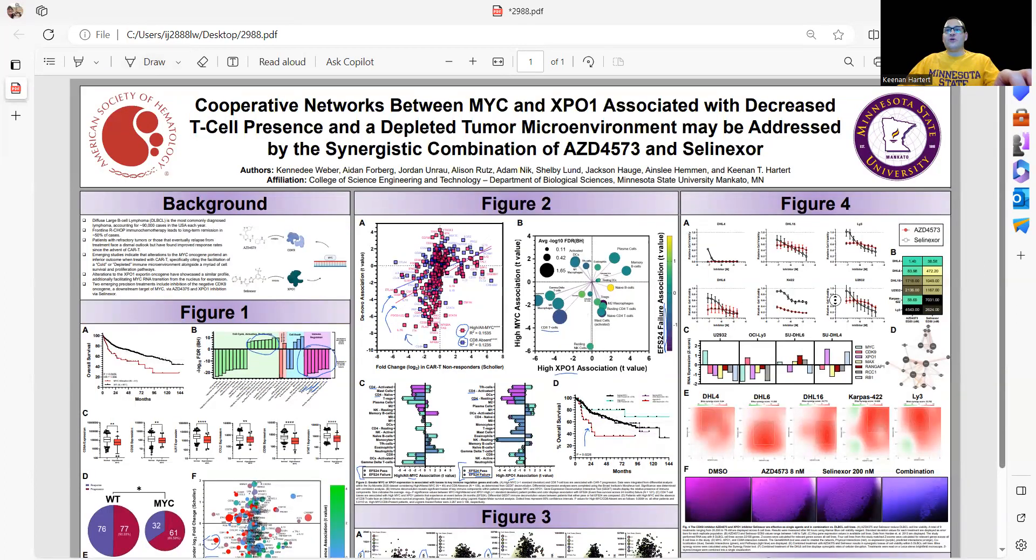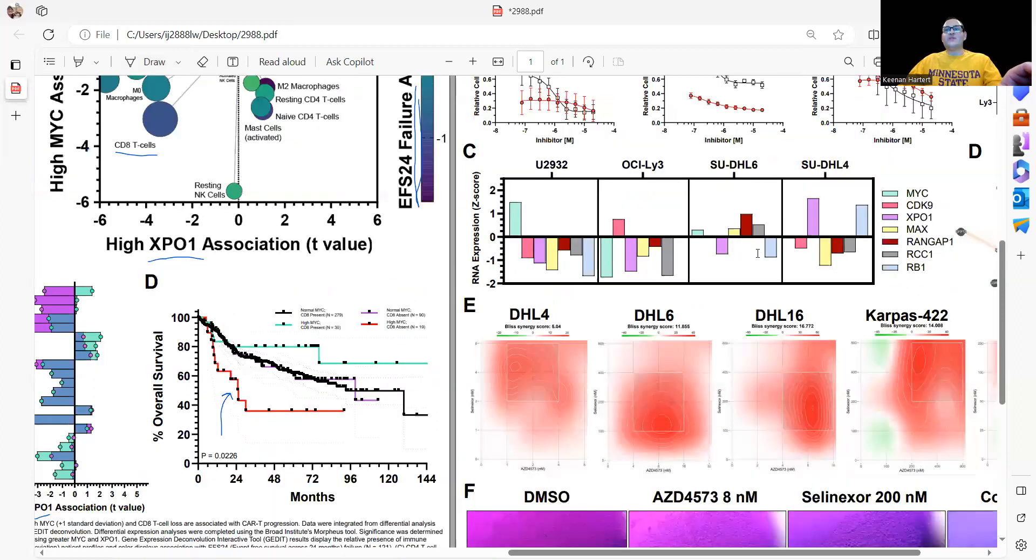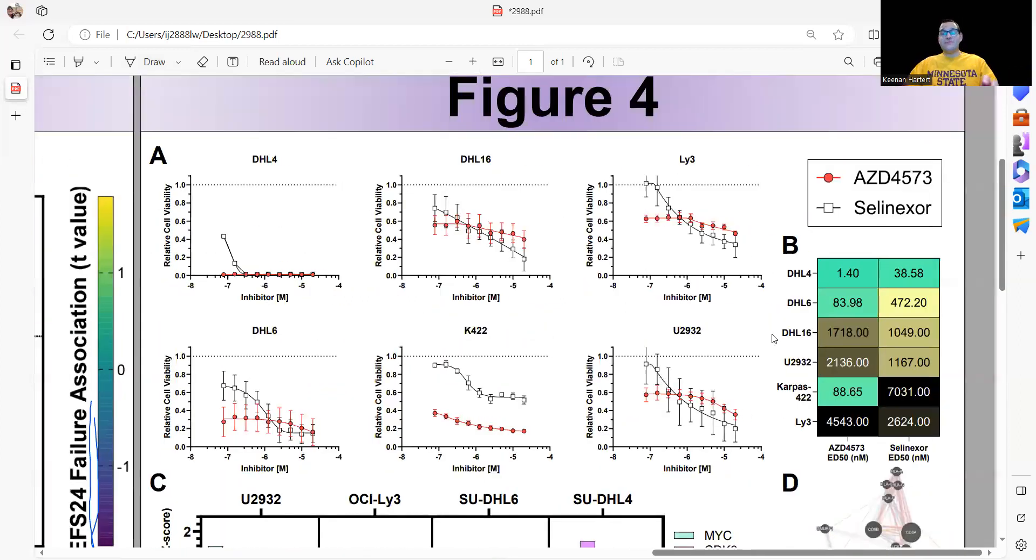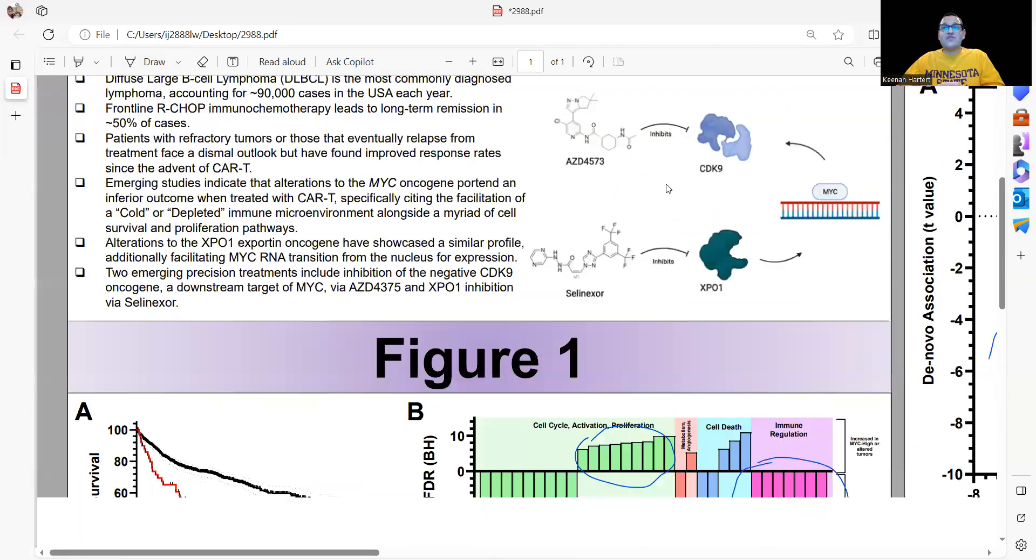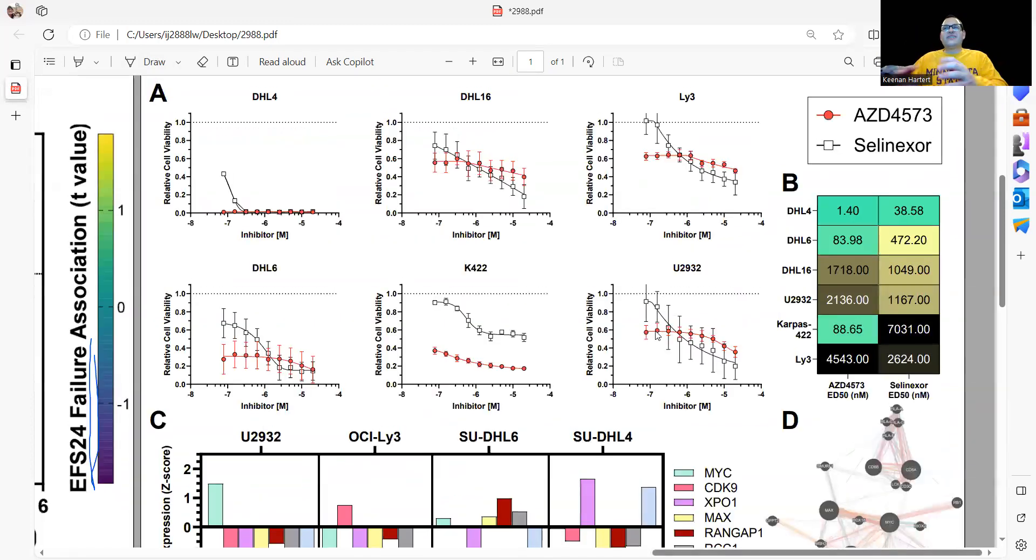Moving into the drugs, if MYC's the problem, can we treat the problem? We looked at AZD and Selenexor. Going back to the intro, this is our plan: MYC will promote the protein CDK9, an oncogene, a growth gene. We can drug that. We can also use Selenexor to drug XPO1, which shuttles MYC RNA out. Coming after this thing on two fronts should be a great synergistic combination.